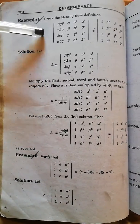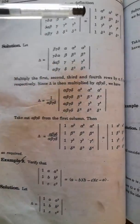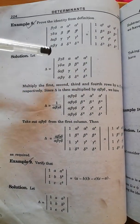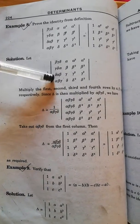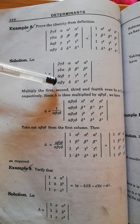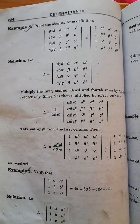Assalamu alaikum students. Now we are going to prove this identity. Basically these are two matrices of four by four. So we consider the left hand side, and by using the properties of determinants, we have to prove that this determinant is equal to this determinant.